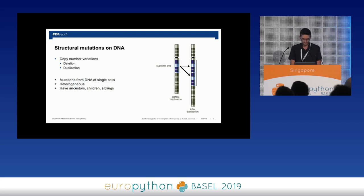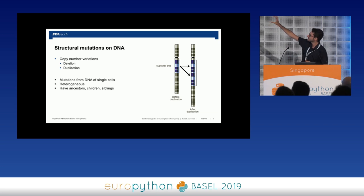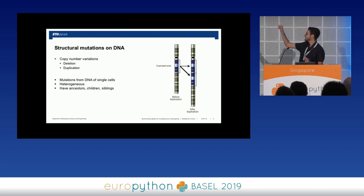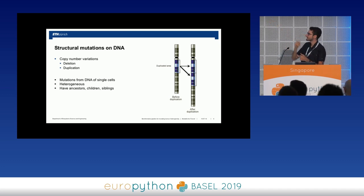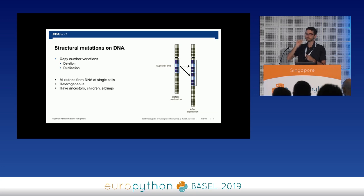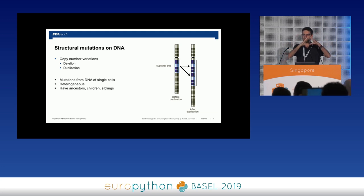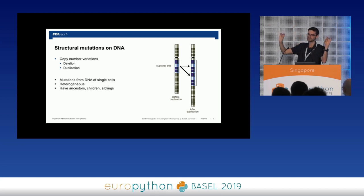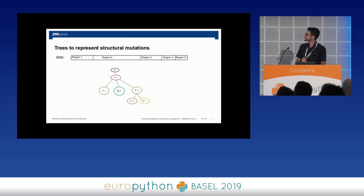The mutation we are considering is from the family of mutations called structural mutations — it is called copy number variation. On one genome, a blue part exists, and on a duplicated genome that region gets duplicated. So there is a variation in the copy number: on the left there was just one copy, but on the right there are two. Copy number variations can be either duplications or deletions. We analyze those at the single cell resolution. These mutations have a family-sort of relationship, because when a mutation happens, sometimes other mutations span from the parent one — there are child mutations, sibling mutations, and ancestors. Therefore, we are modeling them in a tree fashion.